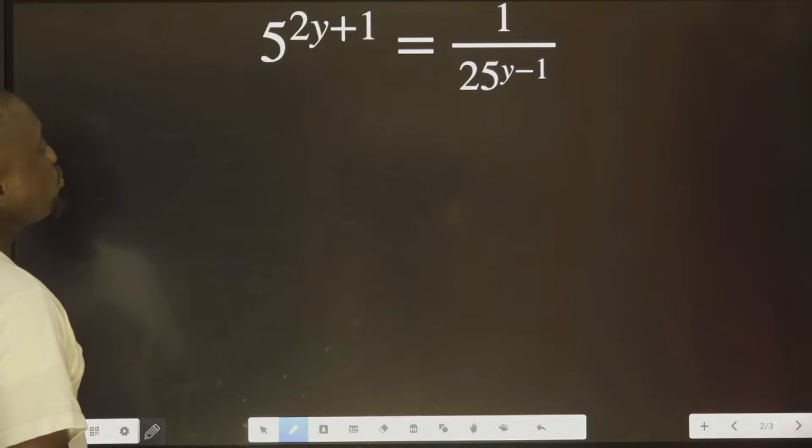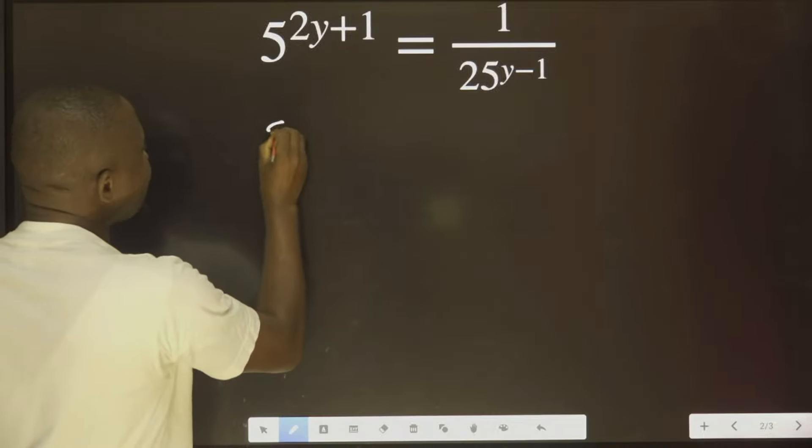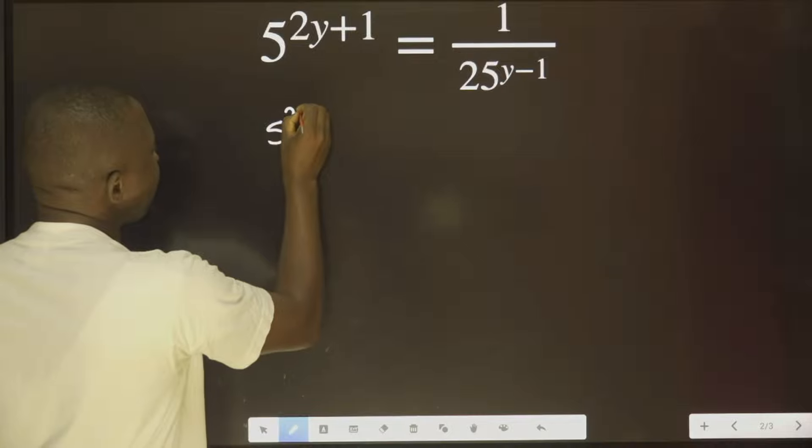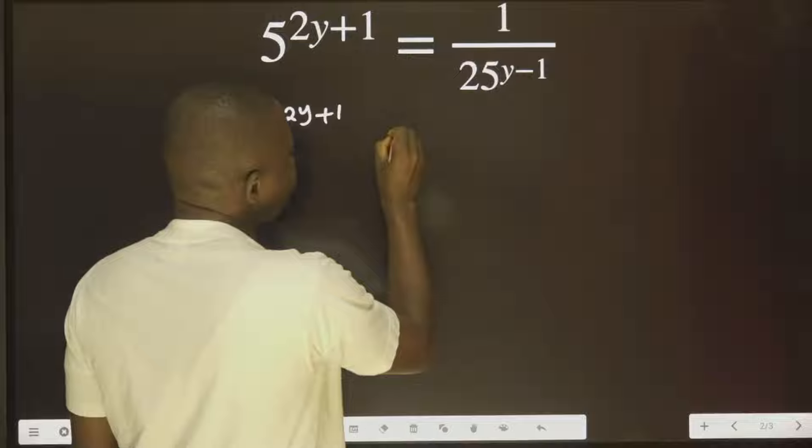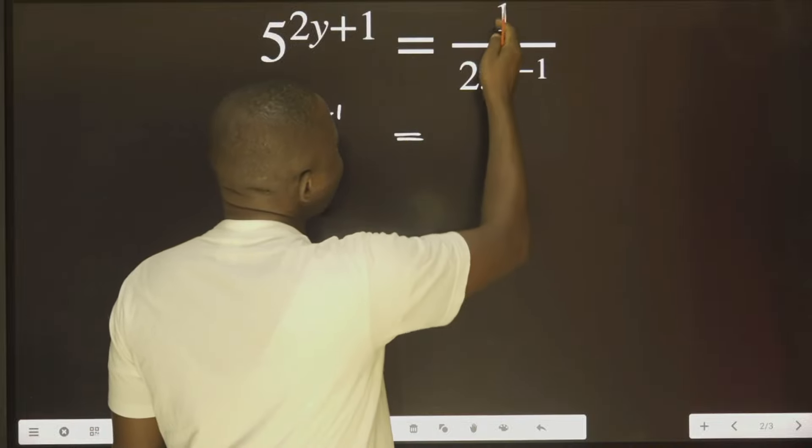The first thing we need to do is write this down because there's nothing I can do here. But from here, I see that I can do something. What can I do?